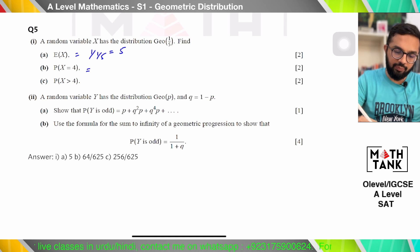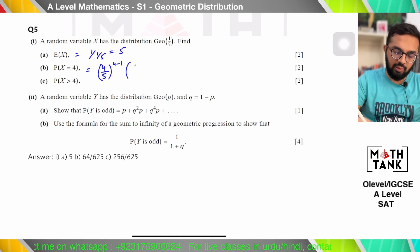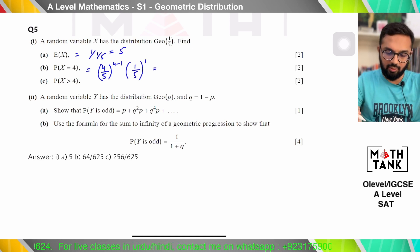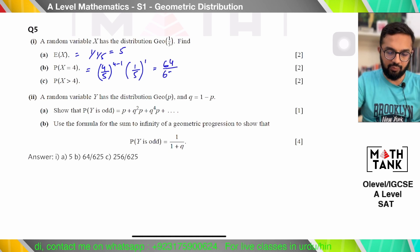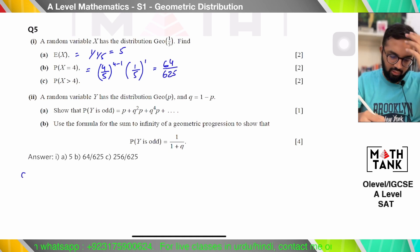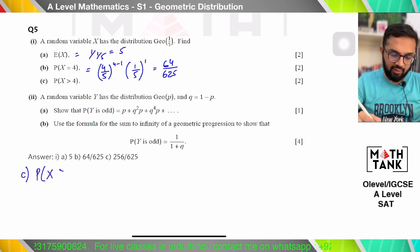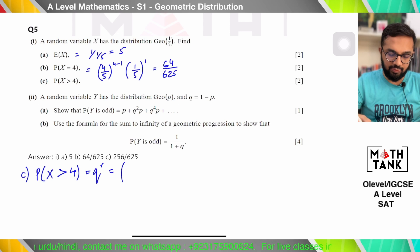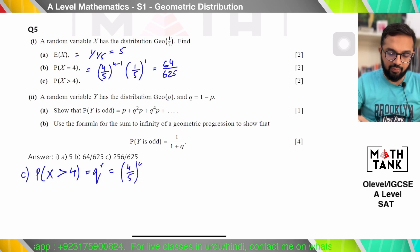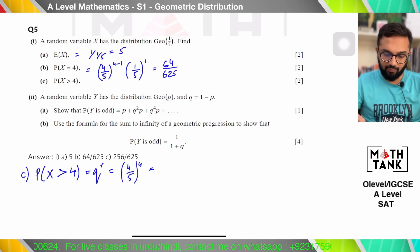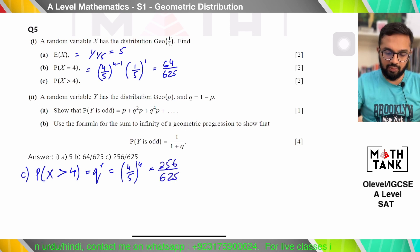For P(X = 4): (4/5)^(4−1) × (1/5) = 64/625. For P(X > 4): that's simply q^r = (4/5)^4 = 256/625.